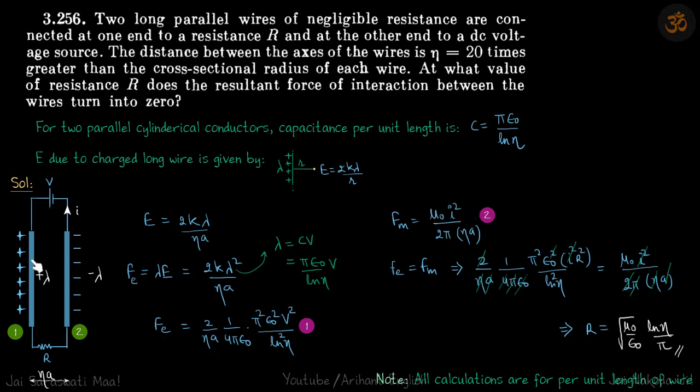Now magnetic field force because of the two parallel wires is mu naught I1 I2 by 2 pi R. So here I1 I2 is same, by 2 pi into distance between them eta A. So Fe equals Fm, and that's what we are supposed to find - when that happens, what is the value of R. So here V in Fe, I can write as IR. Just put these values here and here, instead of V put IR, most of the things will get cancelled and you will get the resistance as root mu naught by epsilon naught ln eta by pi, which is our answer.